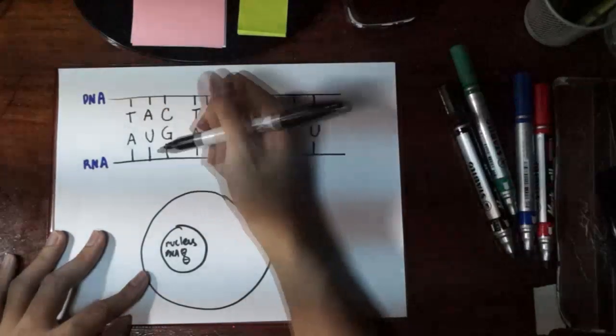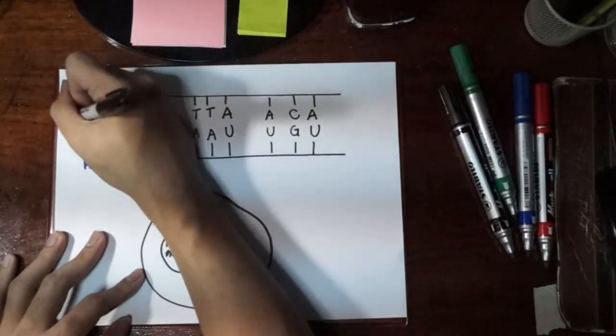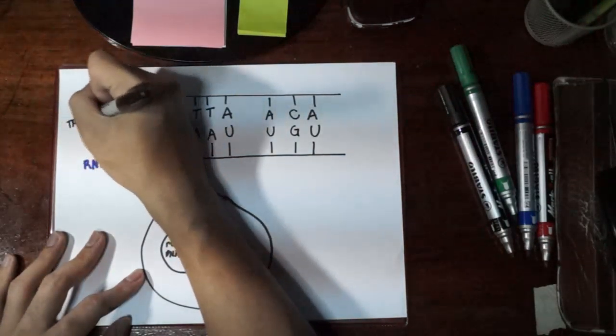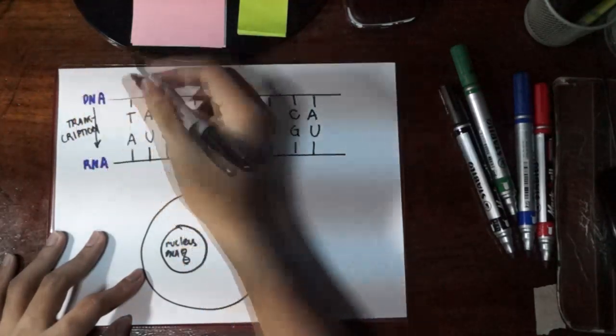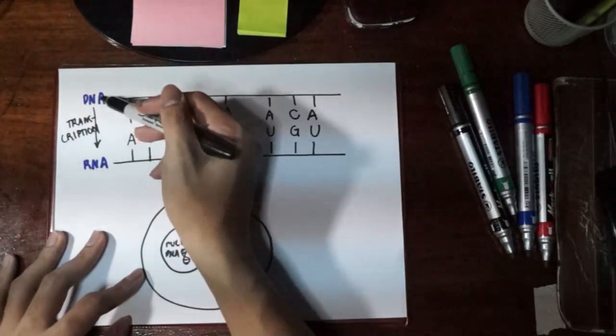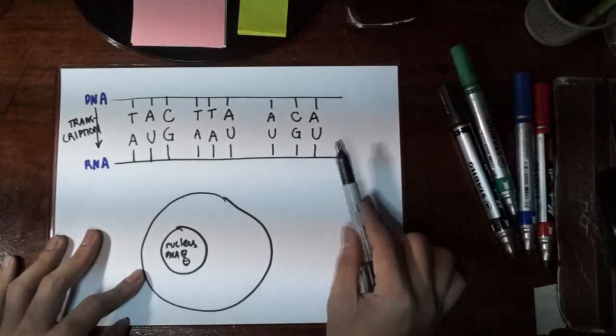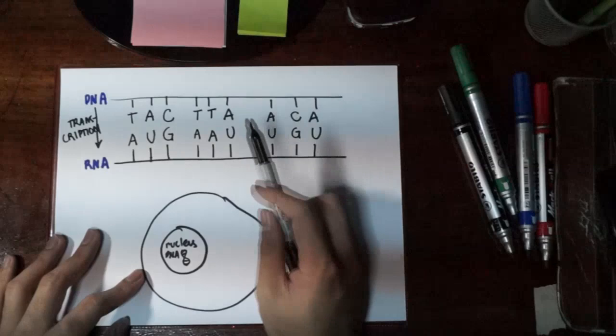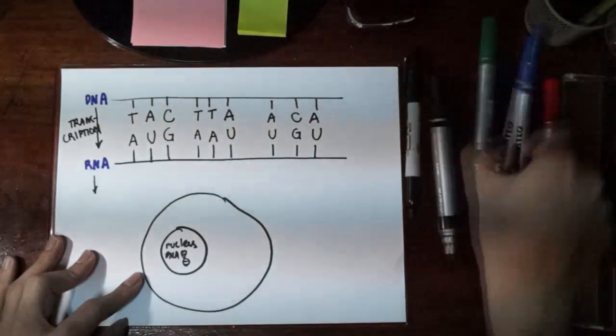So the process right here that we did from DNA to RNA is known as transcription. You transcribed the DNA into a particular RNA. And the purpose of the RNA here that you produce is the RNA would now give rise to our particular protein.